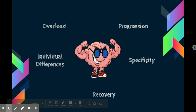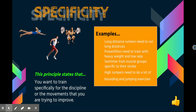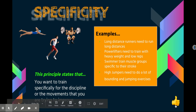Specificity is the principle that says you want to train specifically for the discipline or movements you're trying to improve. If you're a runner, you specifically want to run and strength train the muscles incorporated with running. If you're a swimmer, you want to target the muscle groups and movements used in swimming. Power lifting — the same exact thing. Long distance runners need to run long distances. Power lifters need to train with heavy weight and low reps. Swimmers need to train muscle groups specific to their stroke. High jumpers need to do bounding and jumping exercises. That's where you'll really see improvement — by targeting specific muscle groups and movements.